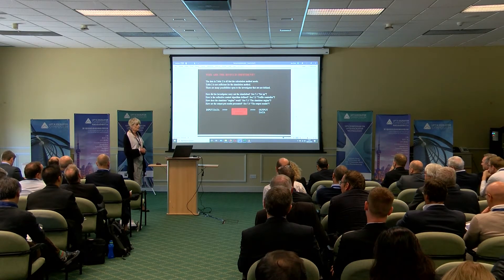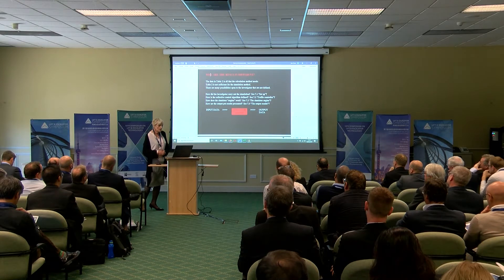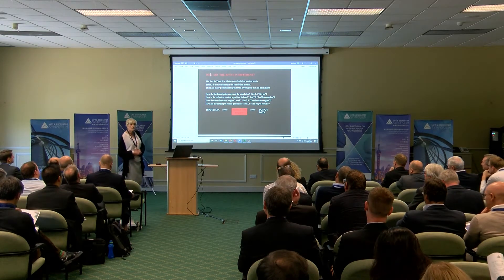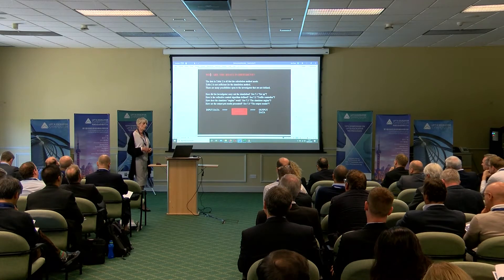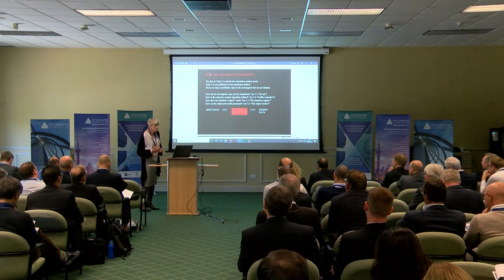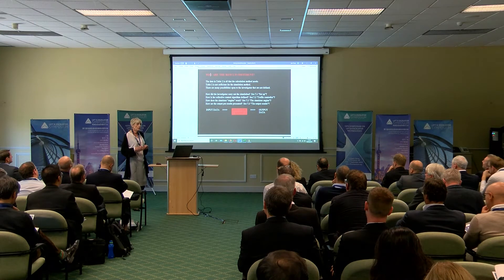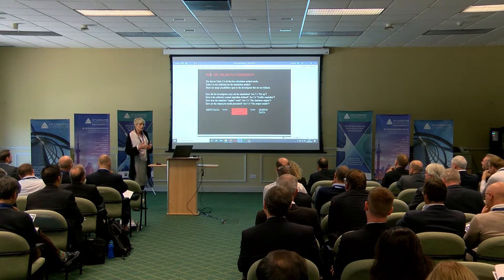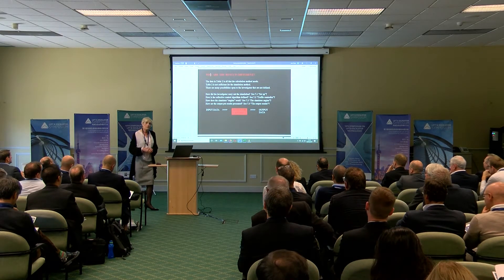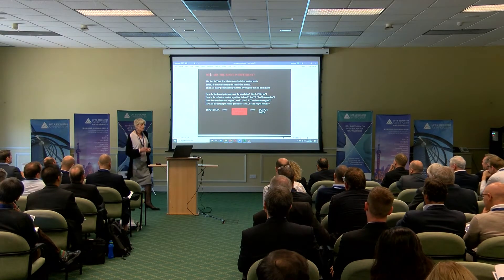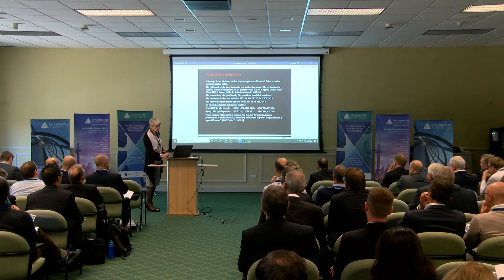Each simulation program probably had a different description of how it represents a collective control system. There are also all sorts of things that happen inside the simulator which you don't necessarily know about: decisions made as to rounding numbers, averaging out, whether you're averaging over a whole window, whether you're dealing with end effects properly. How are the output results presented — by a moving window, a constant window, an average? There's a whole stack of information inside the simulation engine that you don't know about. And I think we've shown, by doing those simulations, that those unknowns have given the variations in the results.